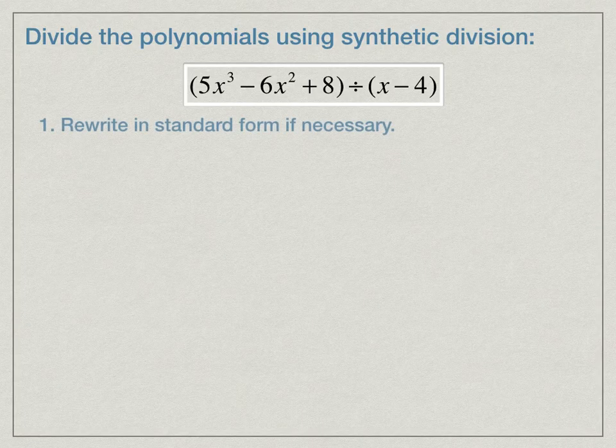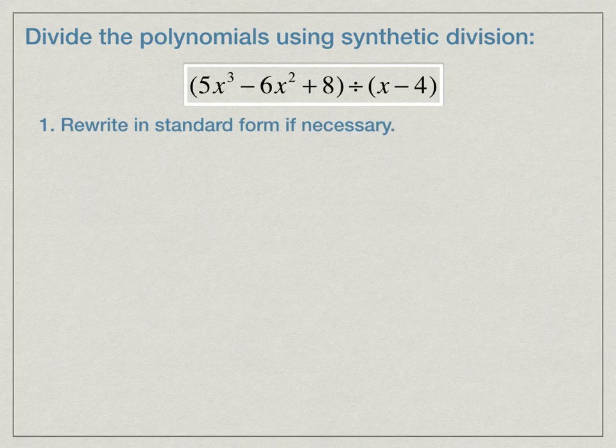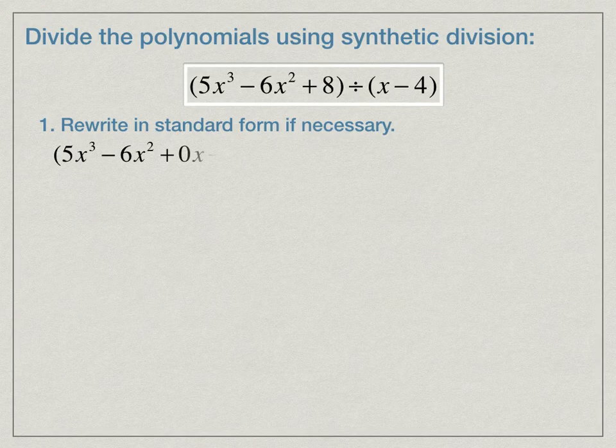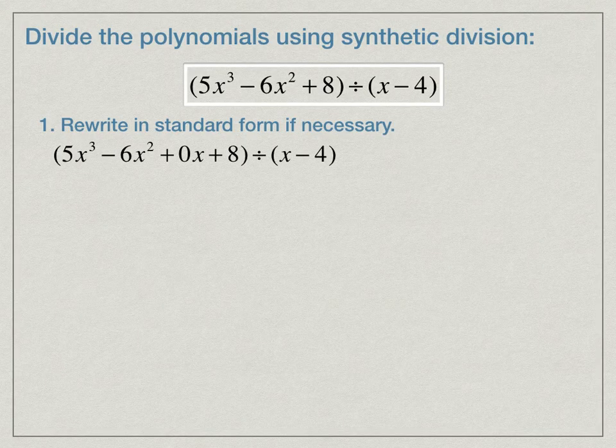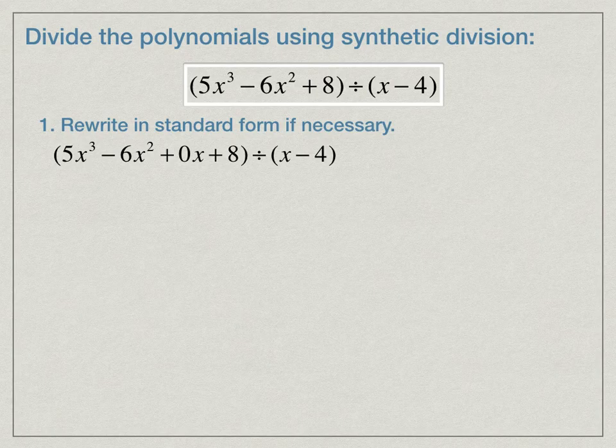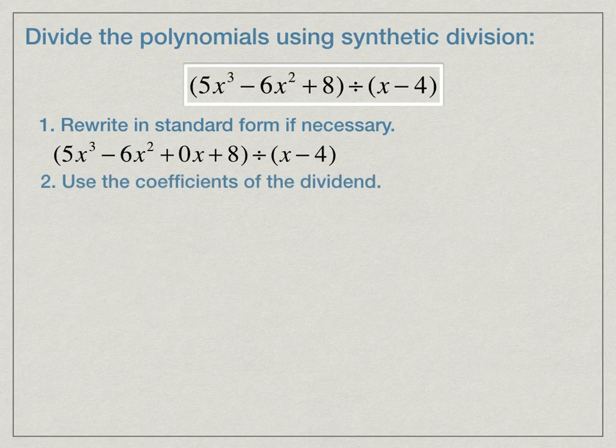The first thing we want to do is rewrite it in standard form if necessary. So we can write the dividend using the zero coefficient for x. Now it's in standard form, and we'll use the coefficients of this dividend. We'll write those down.